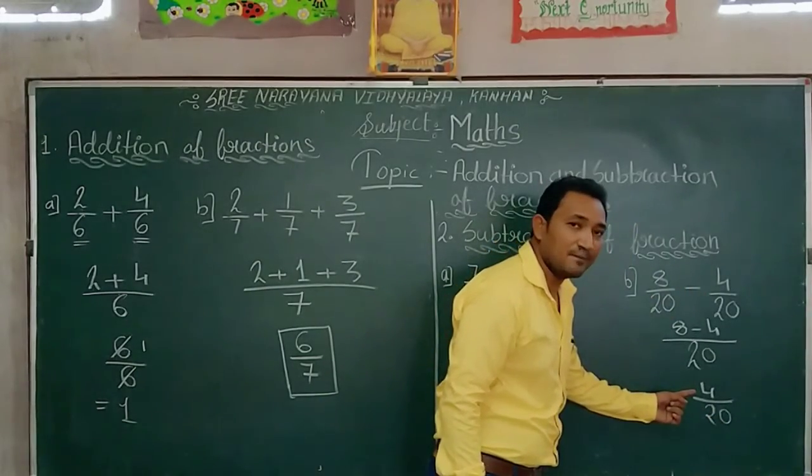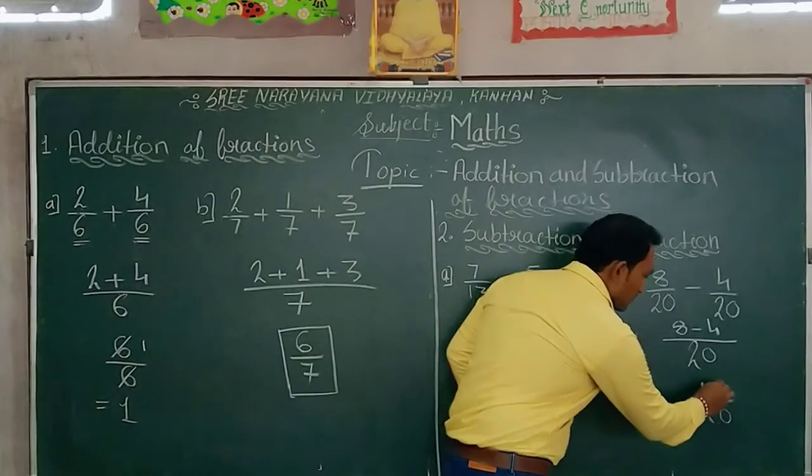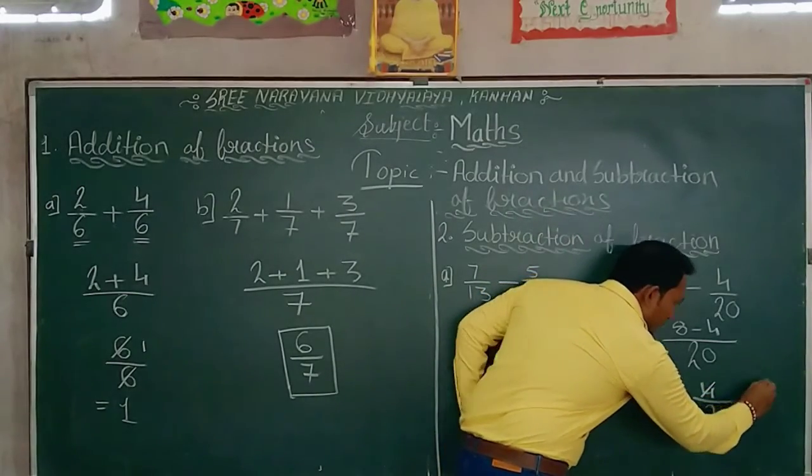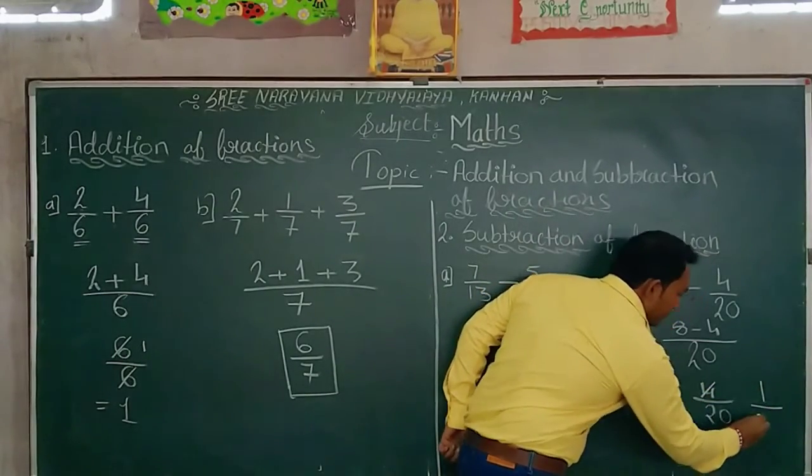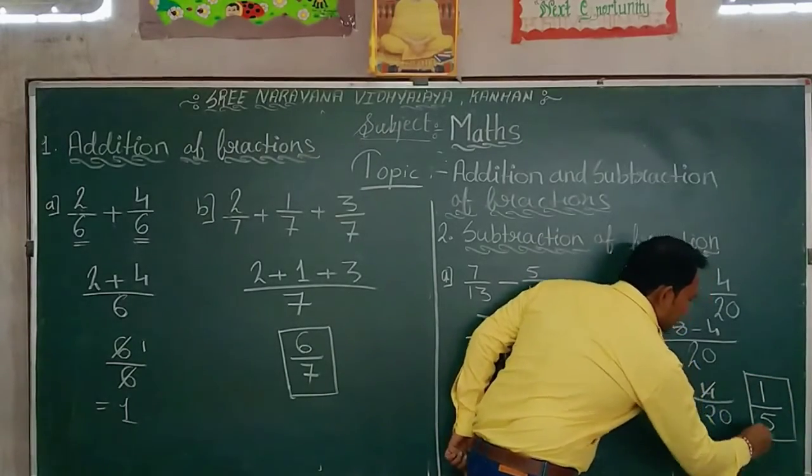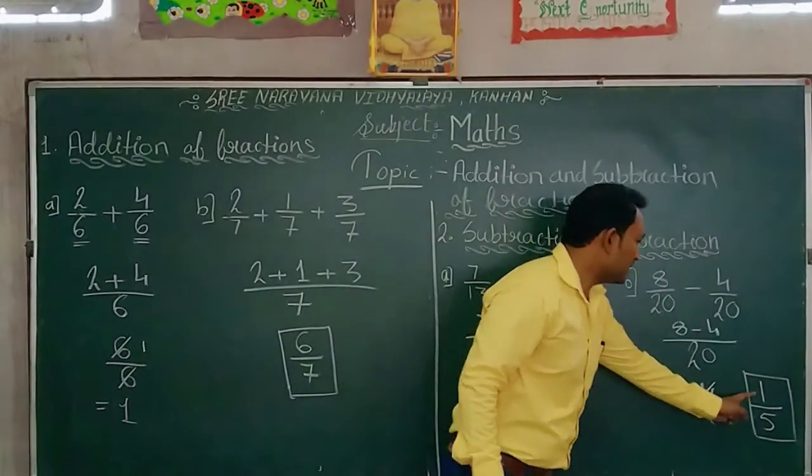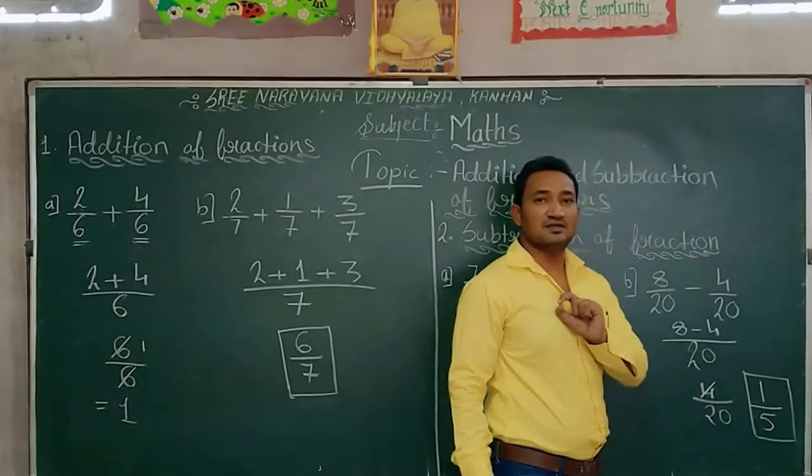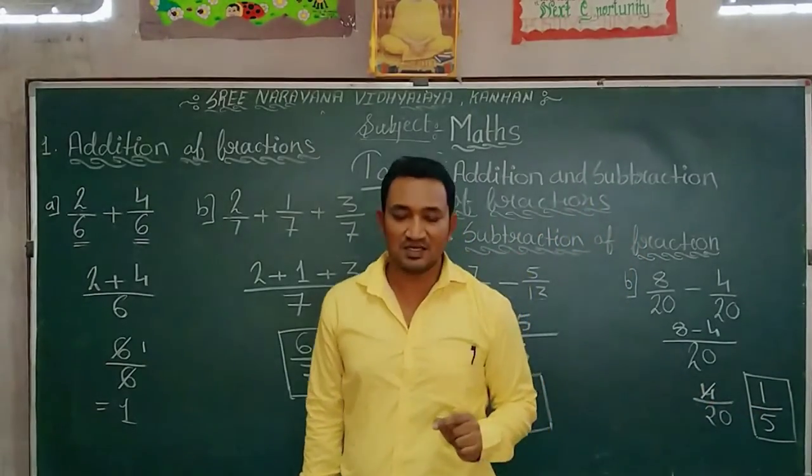And again it is divisible by 4. It means 4 ones are 4 and 4 fives are 20. In this way, 1 by 5 is our answer. I hope you understand.